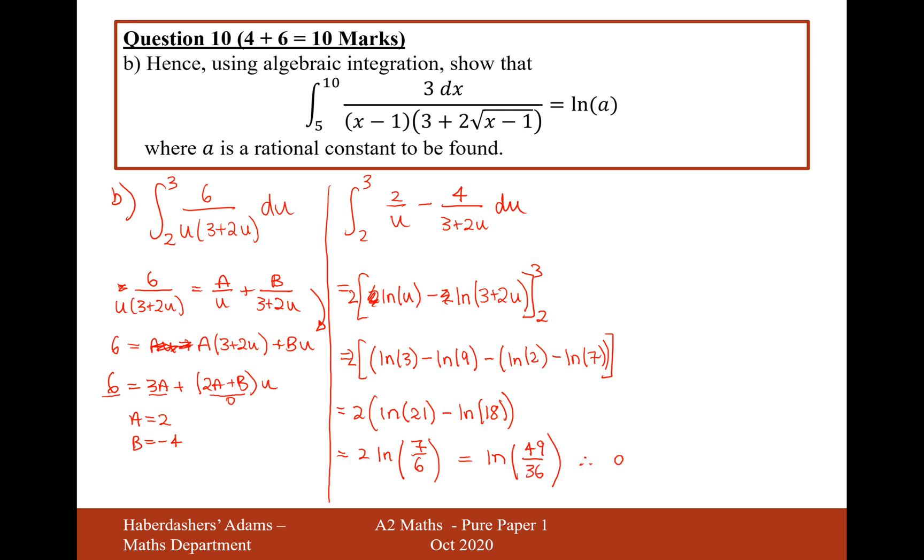So therefore, a, that's this value a on the right-hand side here, is going to equal 49 over 36. So there we are, that's the answer to question 10 there. So integrating using partial fractions, using the ln rule inside your integrals, and making sure you know how to factorise a little bit from the top to use the ln rule effectively. So yeah, that's the answer to question 10, worth 10 marks there. Let's move on to question 11.